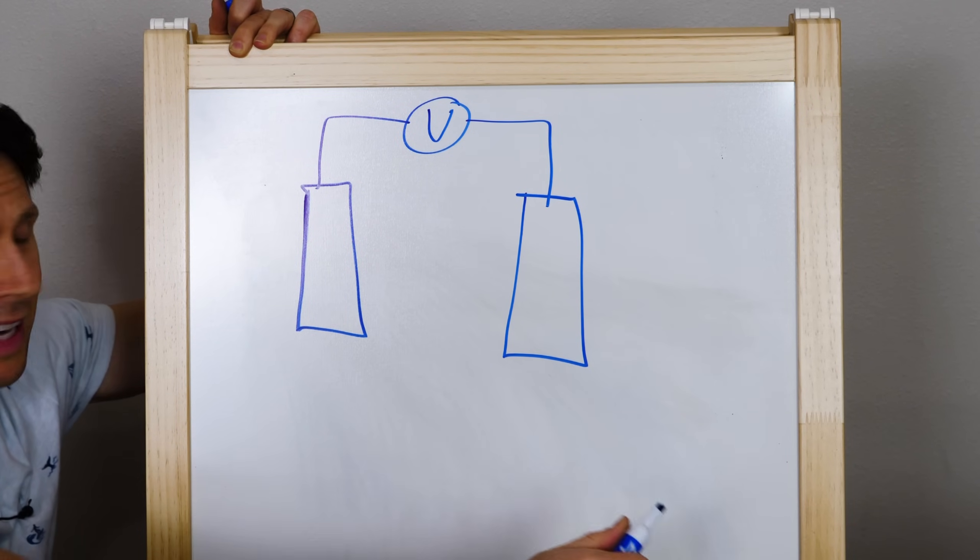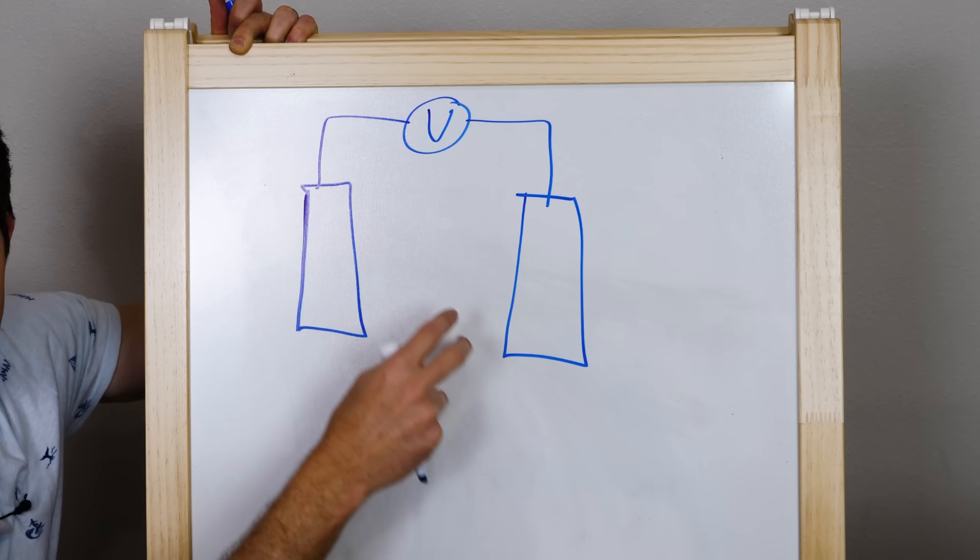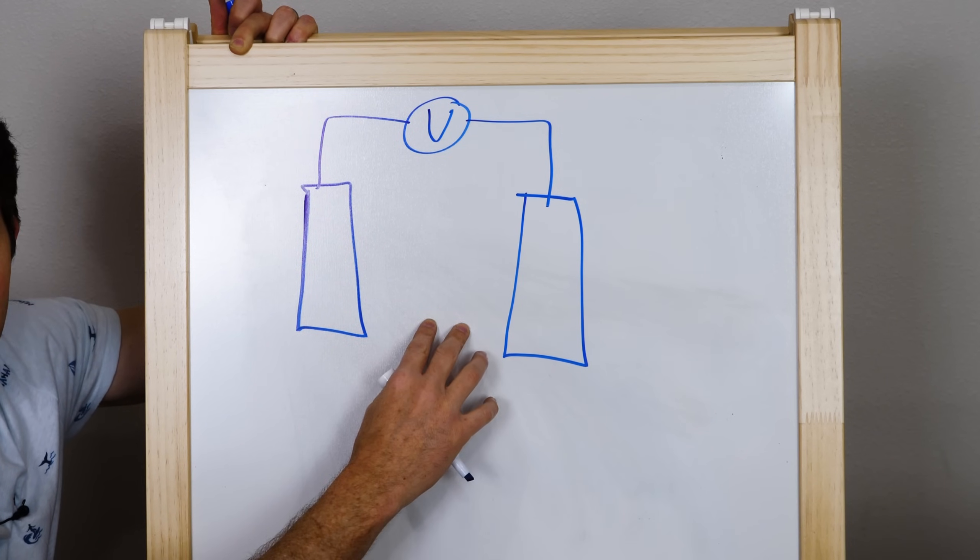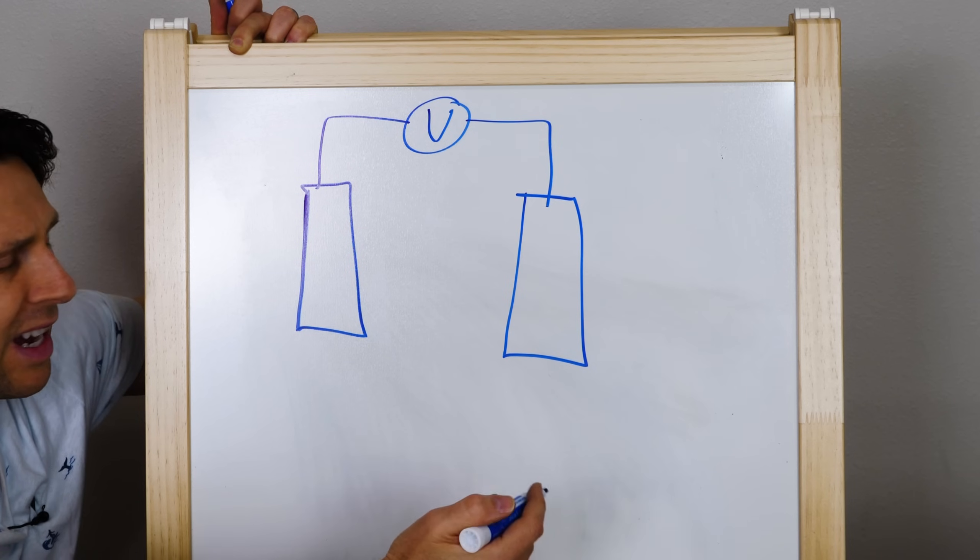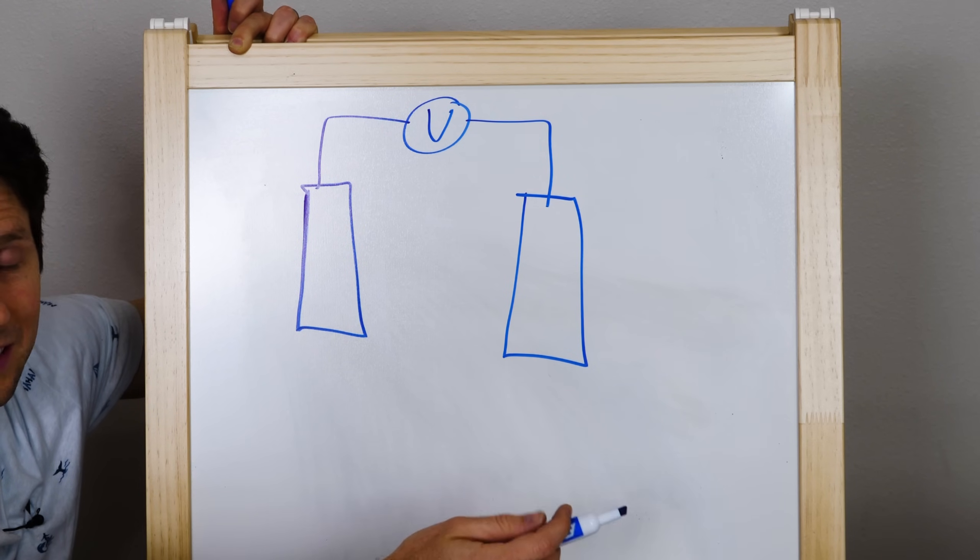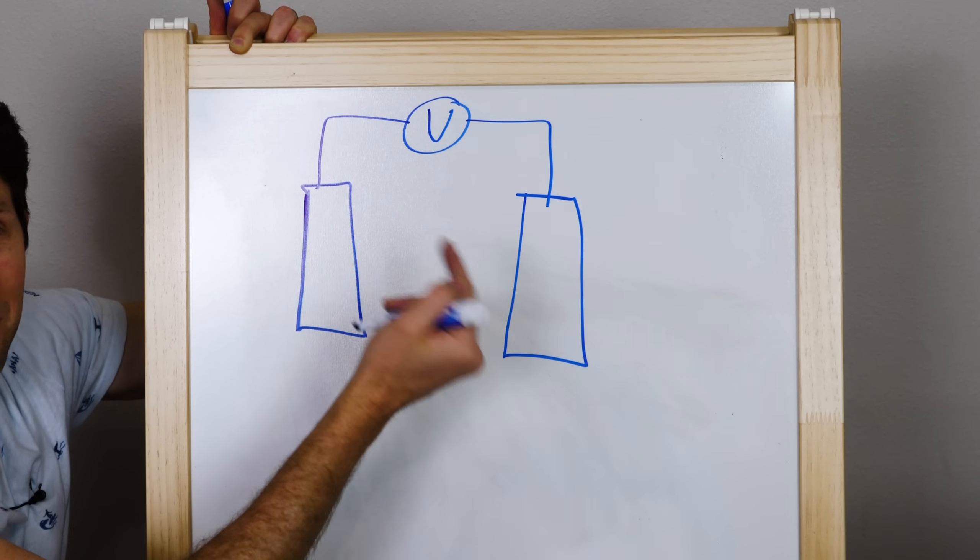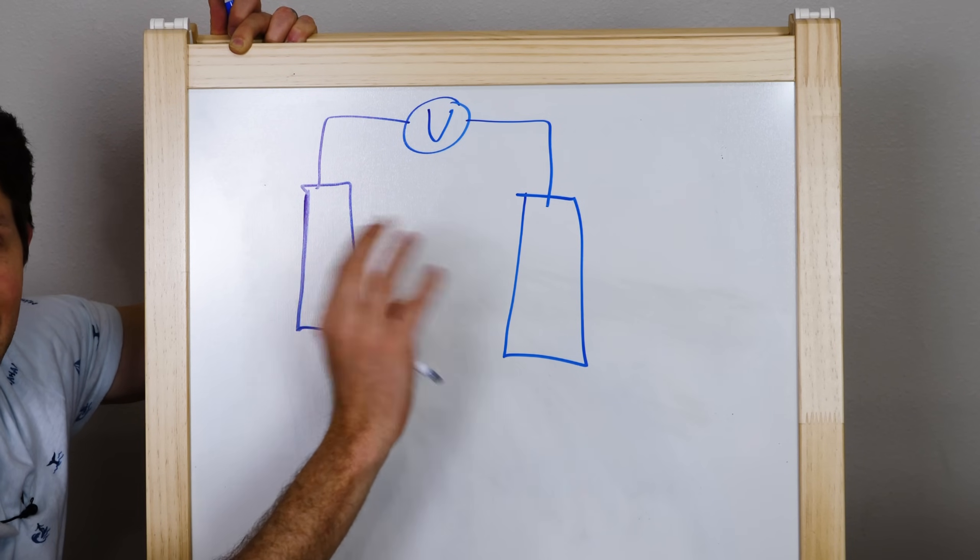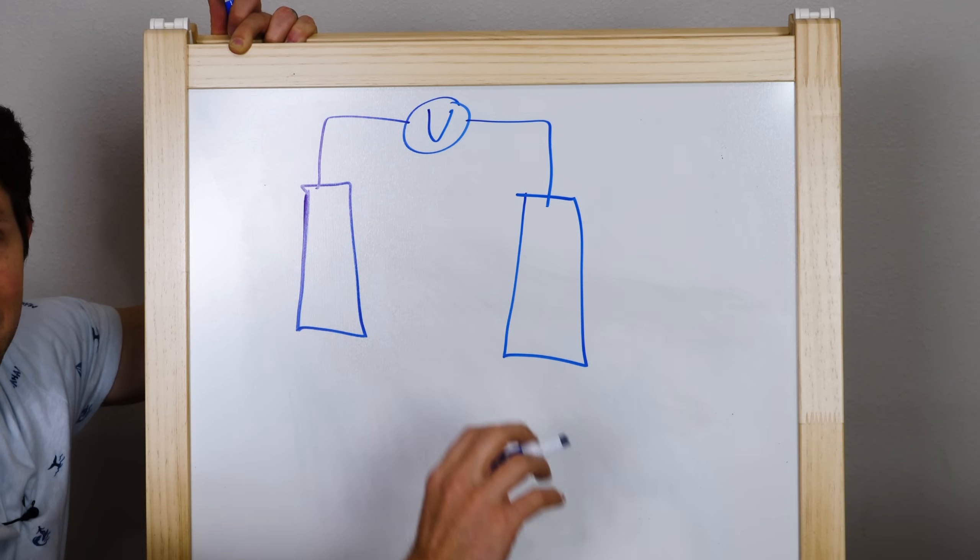So in real life, how are we actually going to achieve this? So in order to do this, all you need is two electrodes. Now these electrodes can be made out of basically anything, anything that's conductive. I'm going to use graphite so that we don't get many side reactions happening because graphite is pretty inert.